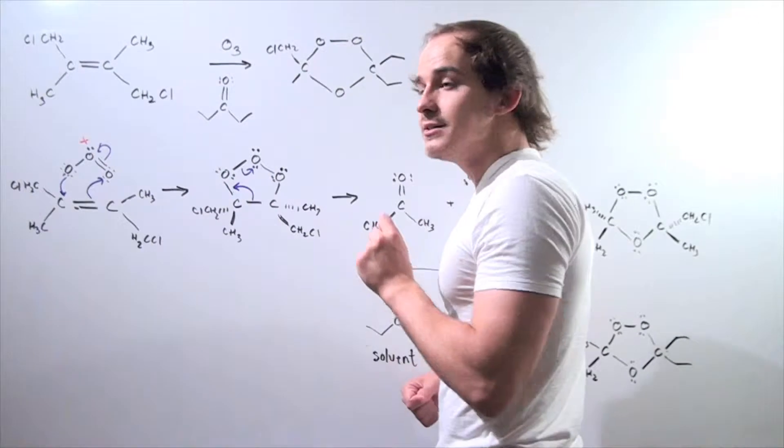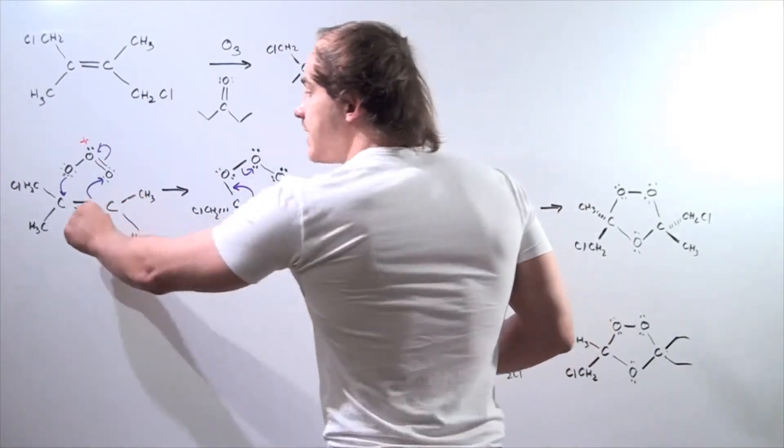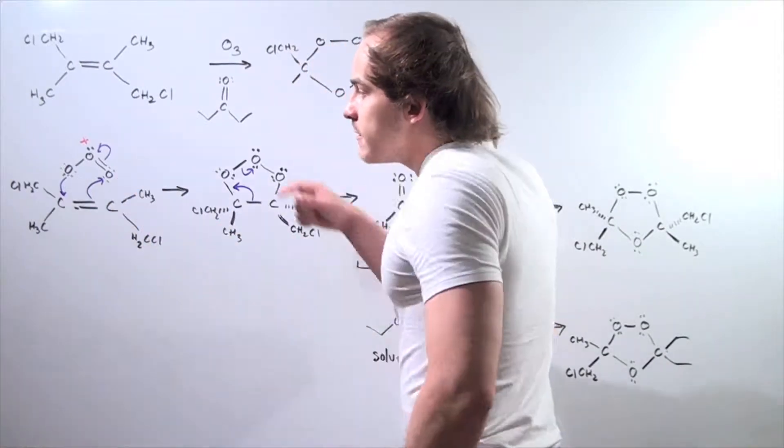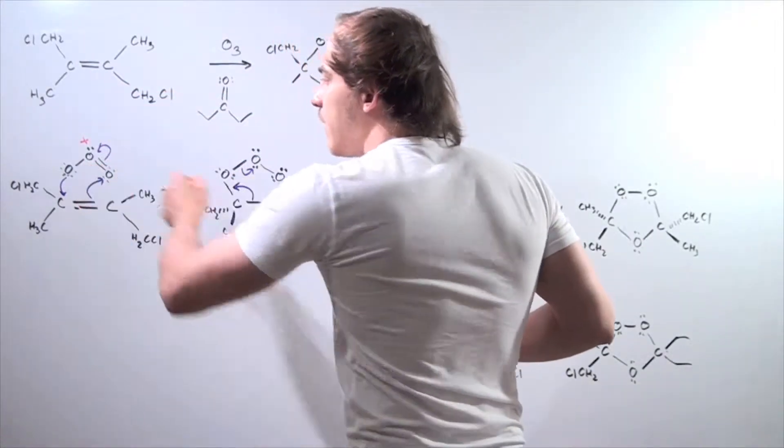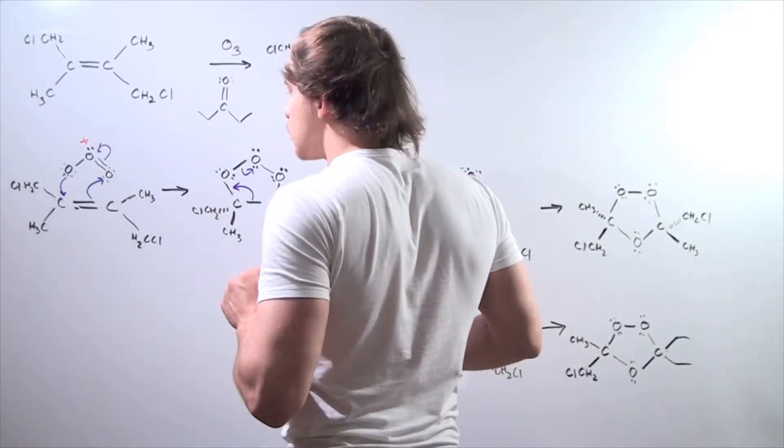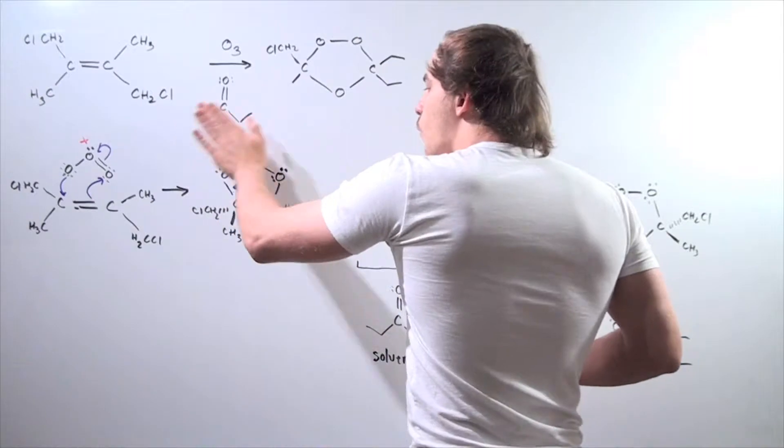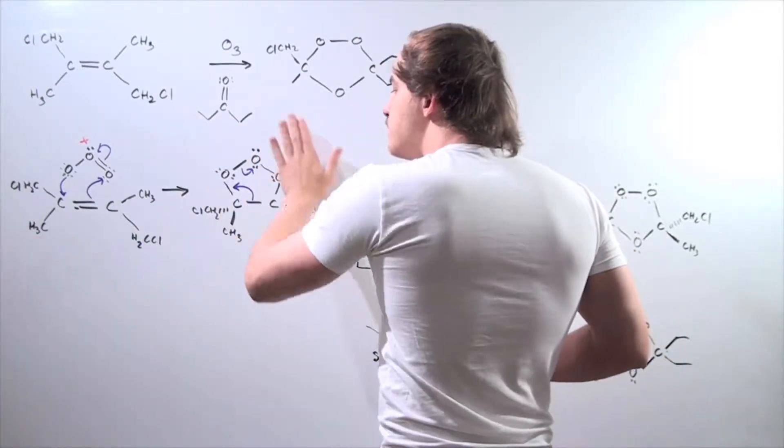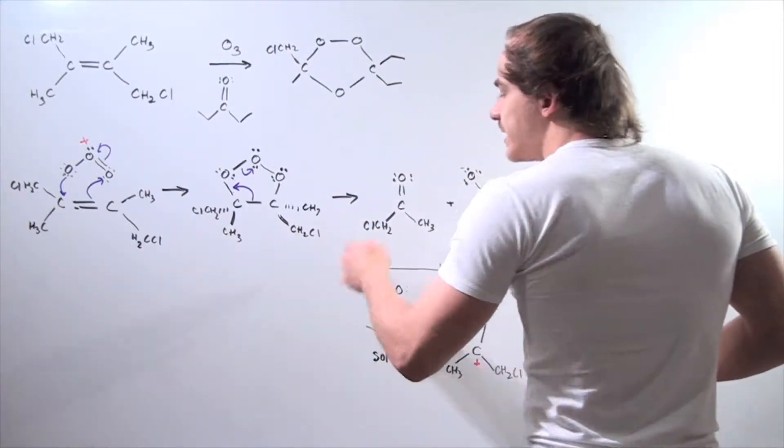We have the two electrons in the pi bond of the carbon-carbon double bond attack this oxygen. This pair of electrons goes on to this oxygen. Finally, the lone pair of electrons on the final oxygen attacks this carbon, forming the following five-membered ozonide ring. So this is our primary ozonide.